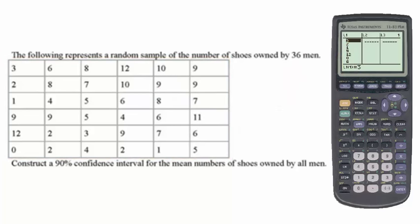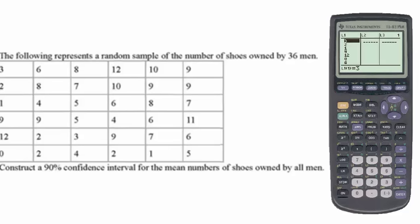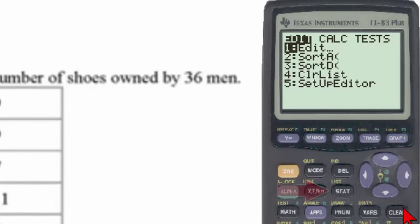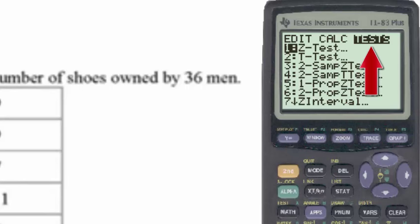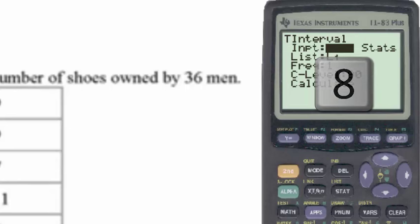After checking to see that the numbers are put in correctly, remember garbage in, garbage out, we'll go back to the STAT button, TEST menu, and since we know that number 8 is the t interval, we'll select number 8.